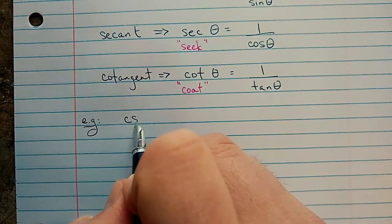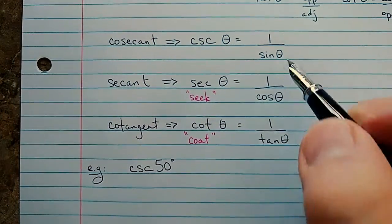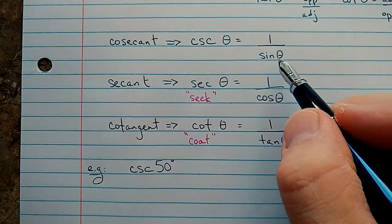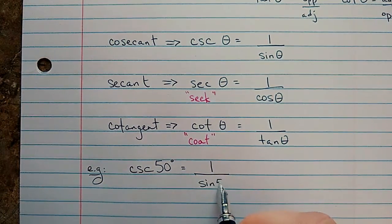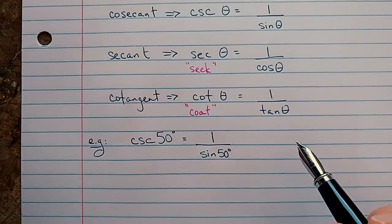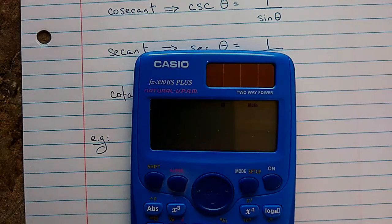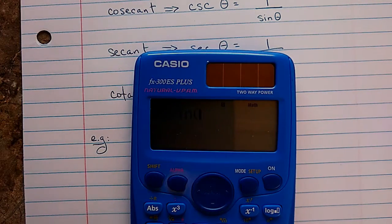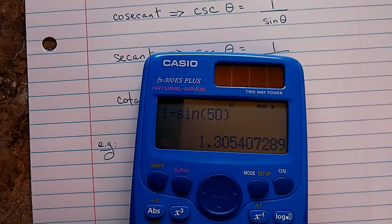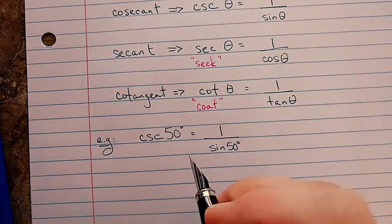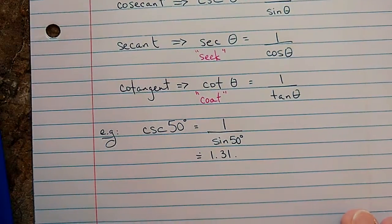Let's say we want to calculate the cosecant of 50 degrees. So we use this ratio right here, this relationship, 1 divided by the sine of that same angle, 50 degrees. So that I can type into my calculator. 1 divided by sine of 50. Looks like about 1.31. So that's one way to do it.